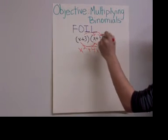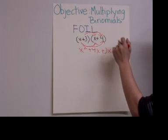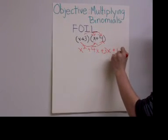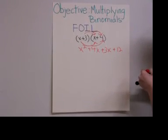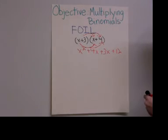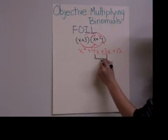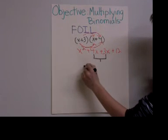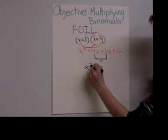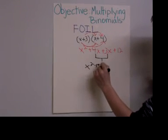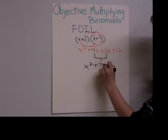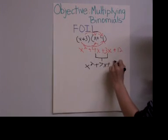we have a positive 3 times a positive 4, which is a positive 12. Now the 4x and the 3x are like terms, so now you get x squared plus 7x plus 12.